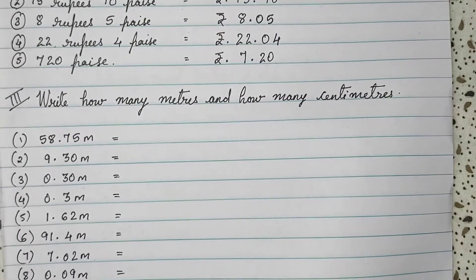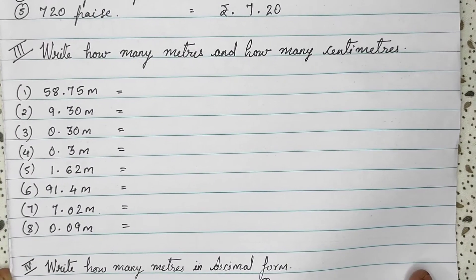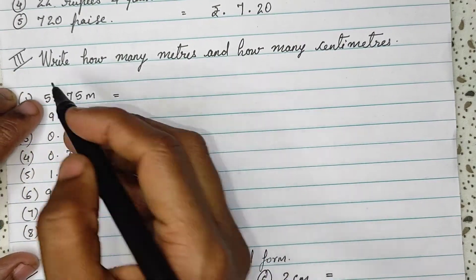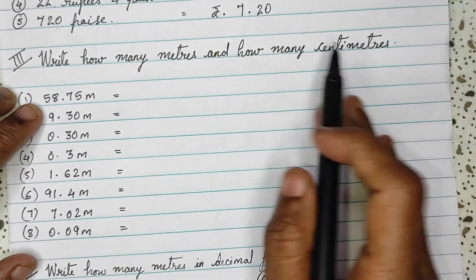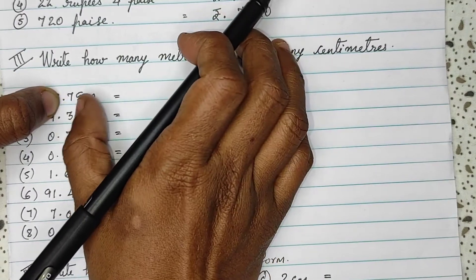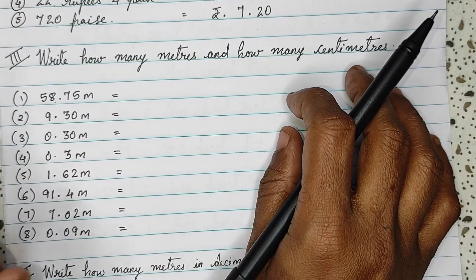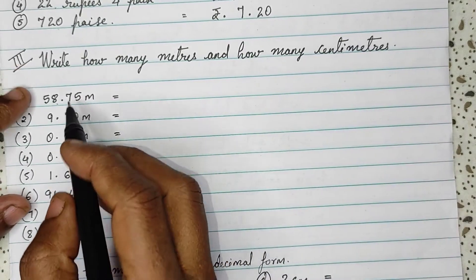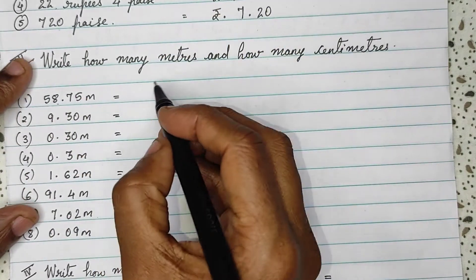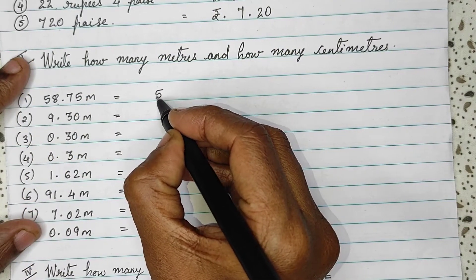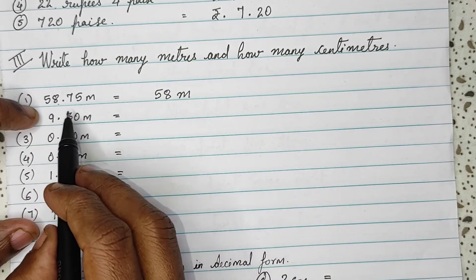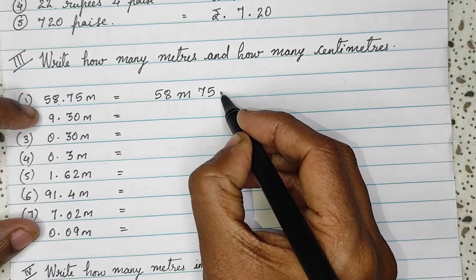Next question: write how many meters and how many centimeters. So, 58.75 — the digits before the decimal will be meters and after the decimal will be centimeters, because 1 meter equals 100 centimeters. So, we write this as 58 meters and 75 centimeters.